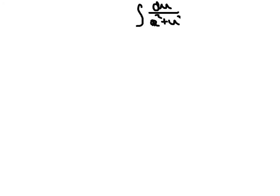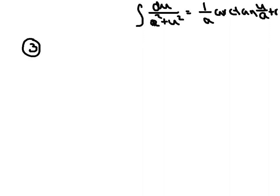The next integral is exciting, and I want to refresh your memory. We said that if you're trying to integrate du divided by a squared plus u squared, you end up with 1 divided by a times the arctan of u divided by a, plus C. That's a very famous antiderivative you'll see a lot with improper integrals. Without further ado, we've got the integral from 0 to infinity of 1 over x squared plus 1 dx.